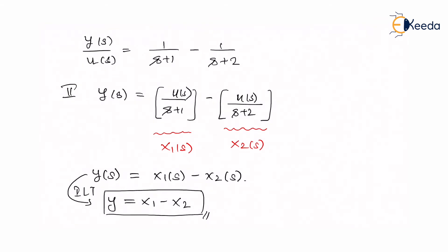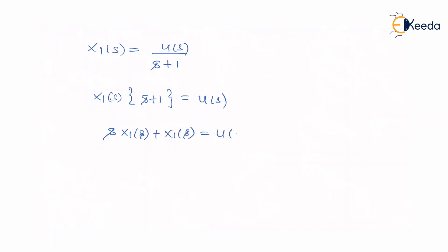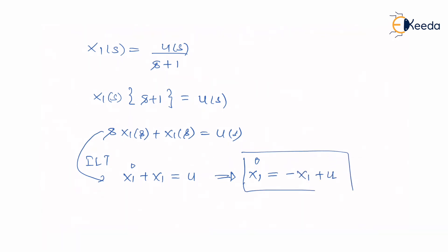Now let us consider x1(s). x1(s) is equal to u(s) upon (s+1) — note it is u(s) upon (s+1), not just 1 upon (s+1). Cross-multiplying gives x1(s) × (s+1) = u(s). Expanding: s·x1(s) + x1(s) = u(s). Taking the inverse Laplace transform: ẋ1 + x1 = u. Writing in ẋ1 format: ẋ1 = −x1 + u. Mark this as a very important equation.